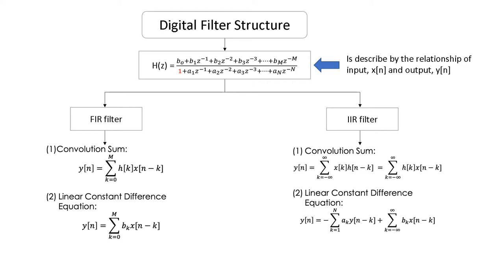The H(Z) transfer function describes the relationship of input and output, where input is X(n) and output is Y(n). If you look at the H(Z) transfer function, the denominator part starts from 1 — this constant must always equal 1. If the value is not equal to 1, you have to do factorization in order to make that part equal to 1.